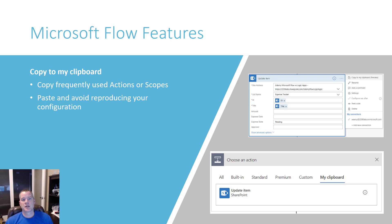That feature is Copy to My Clipboard. What this allows you to do is copy frequently used actions or even scopes that you can then paste in other areas of your flow and reuse them. I want to show you this in action because once I do that, I think it really emphasizes why this is such a useful and needed feature.